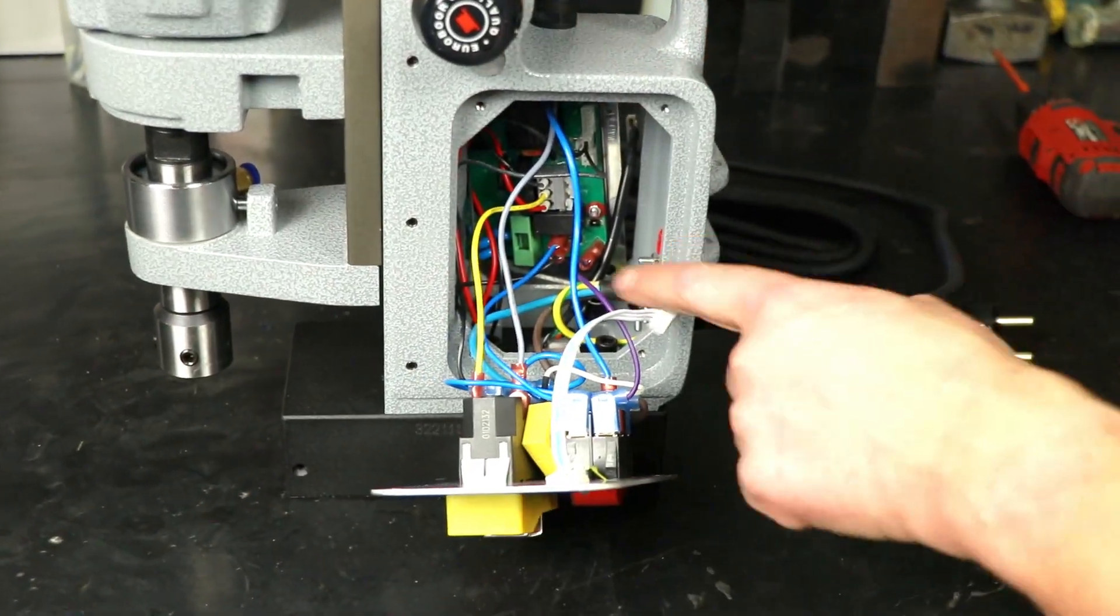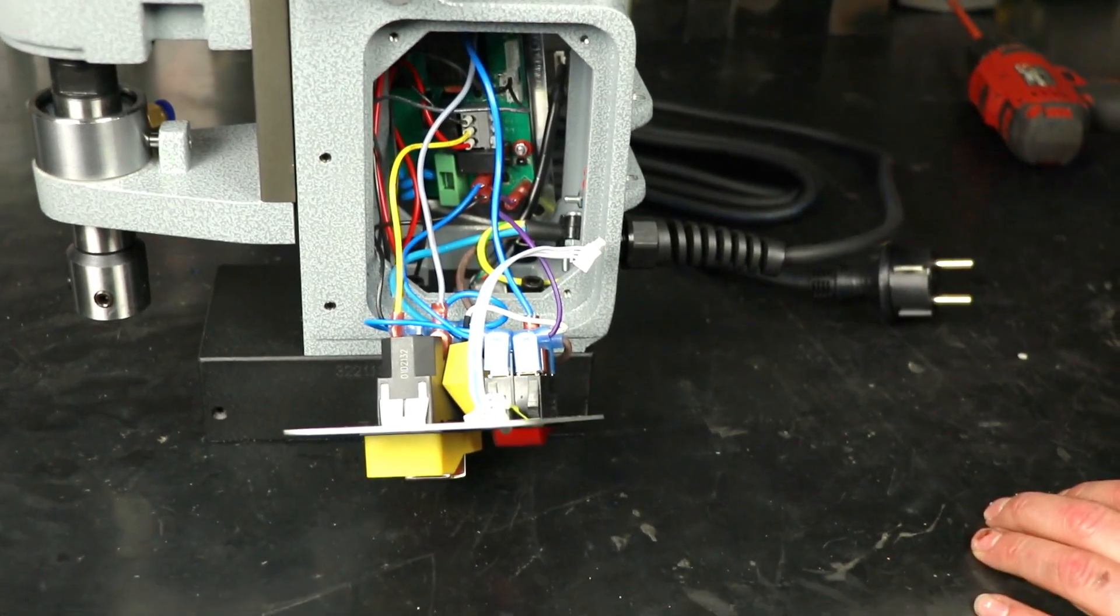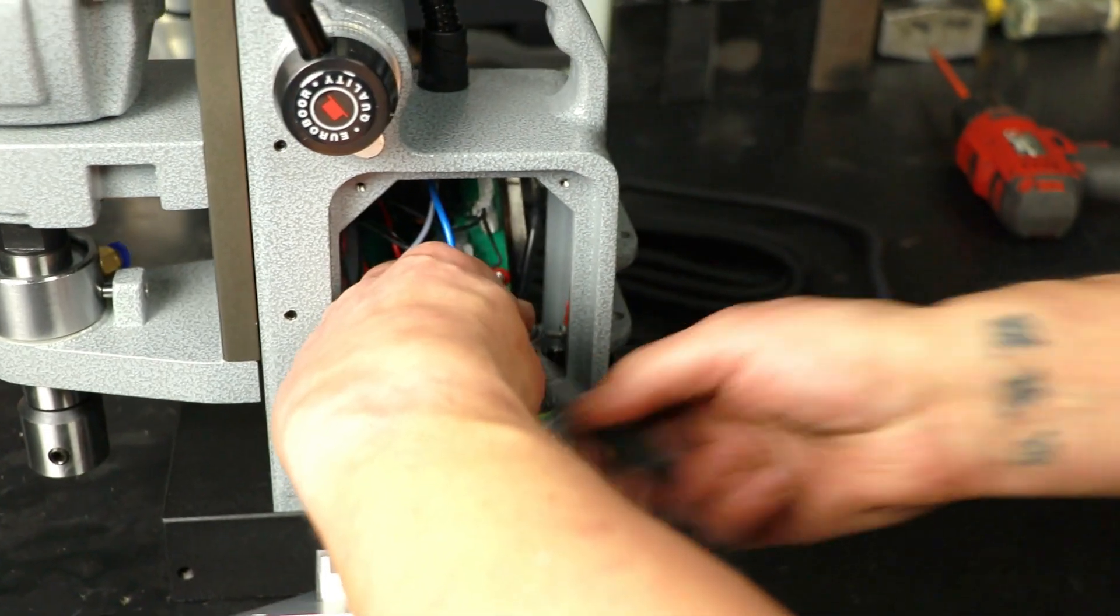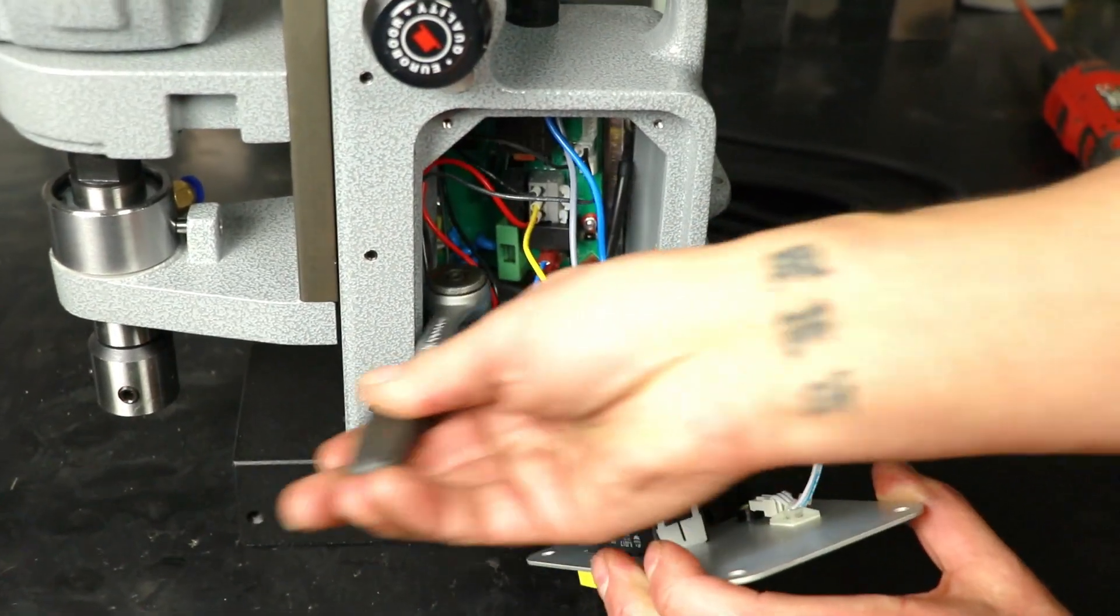After this, we proceed with detaching the M6 bolts in order to detach the magnet from the machine. Be prepared, make sure the machine doesn't topple forward.